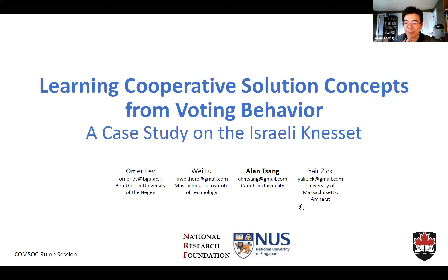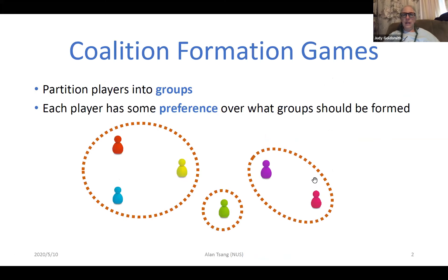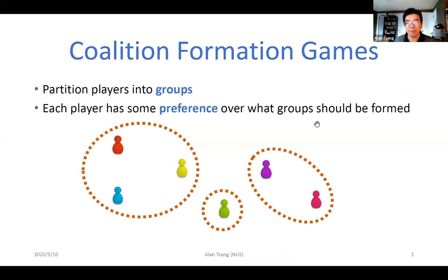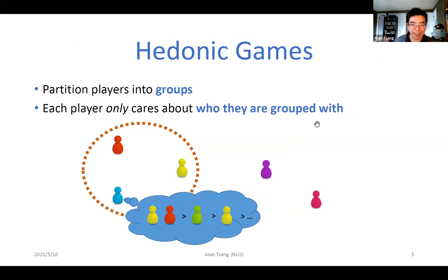Thank you. This work looks at voting data from the Israeli Knesset through the lens of game theory. Coalition formation games have players that are partitioned into groups, where each player has preferences about which groups form — you can think of it as wanting to form teams with friends and avoiding people you don't get along with. Hedonic games focus on preferences where each player cares only about the people they are grouped with.